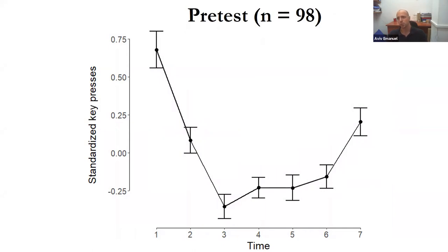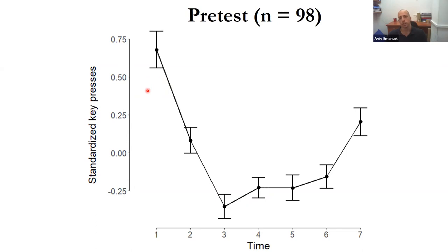This is a typical result from our pretest. We divided the 10-minute block into seven equal time segments. On the y-axis you can see the frequency of spacebar presses, standardized within participants. What we generally see is this U-shaped pattern in key presses — the spacebar being the measure of effort exertion. This pattern also appeared in other pretests. We conducted three control experiments, which indicated that this U-shaped pattern does not appear when the task lacks a clear endpoint or a timer/progress bar, and it does not appear when the task is too short, for example two minutes or less.